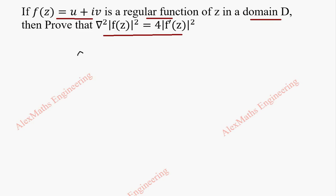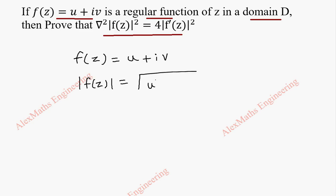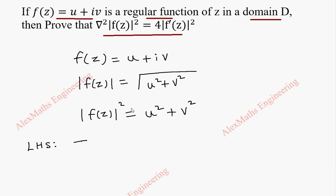Let's take f = u + iv. We need |f|, which is the square root of u² + v², and we need the square of it. So |f|² = u² + v². Now let's take the left-hand side which has the del operator: ∇²|f|² = ∇²(u² + v²).